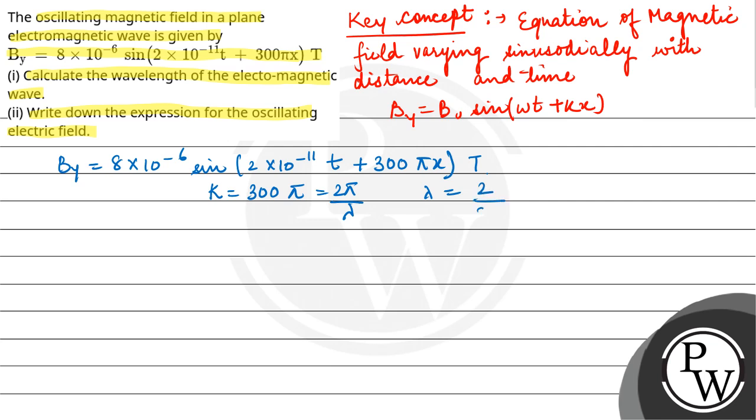So λ will be equal to 2π/300π, which equals 6.7 mm. This is the wavelength of the electromagnetic wave.